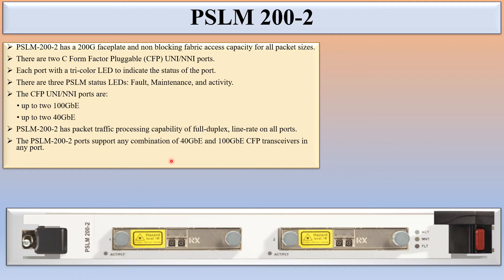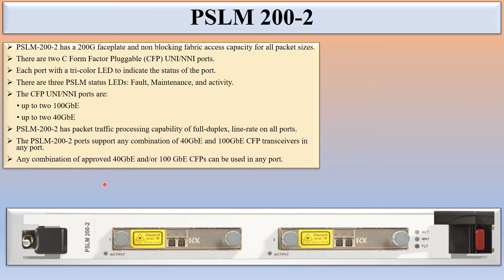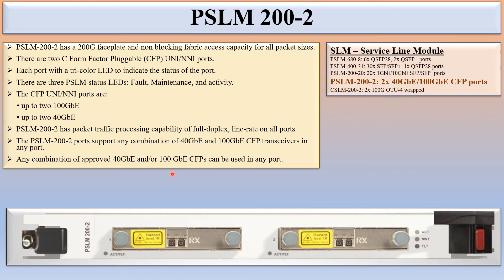You can insert a 40 GB or 100 GB transceiver in any port — either port 1 or port 2. Any combination of approved 40 GB and 100 GB CFPs can be used in any ports. So PSLM 200-2 has 2 x 40 GB or 100 GB CFP ports.